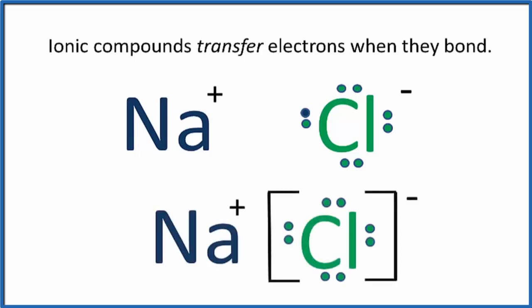We'll draw it like this: we'll have the positive on the sodium, and we'll put the chlorine in brackets with all eight electrons now and a negative sign. So that's the Lewis structure for NaCl.